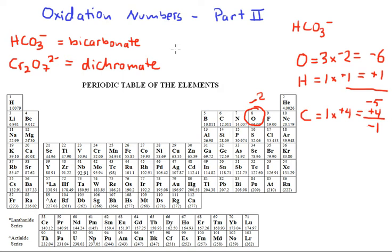So the oxidation states in bicarbonate will be hydrogen is plus one, carbon is plus four, and each oxygen is minus two.